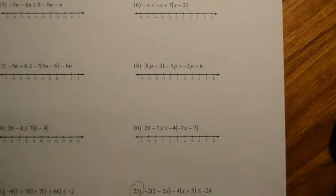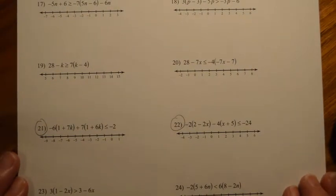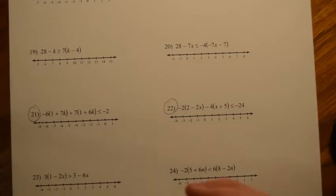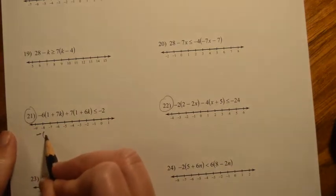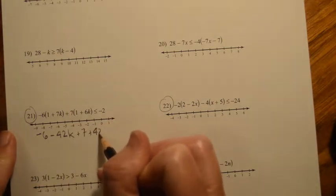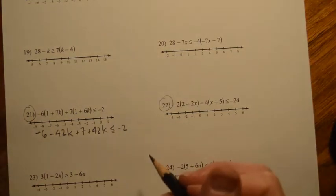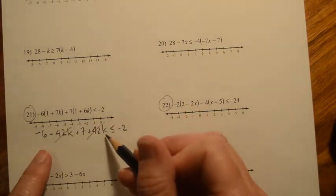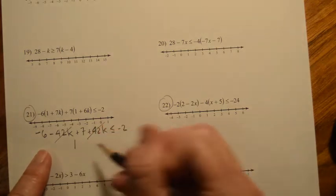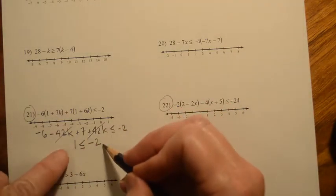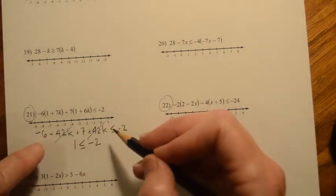Page 86. I only want to look at problems 21 and 22 because they are very special — we're just going to do 21 and 22 the way we have been doing them, but something unusual happens. On this side I'm going to get negative 6 minus 42k plus 7 plus 42k is less than or equal to negative 2. I combine like terms and realize that the terms with the variables cancel out. So I end up with 1 is less than or equal to negative 2. A moment of panic sets in because you did not intend to cancel those variables out — it just happens.